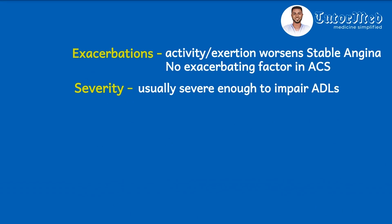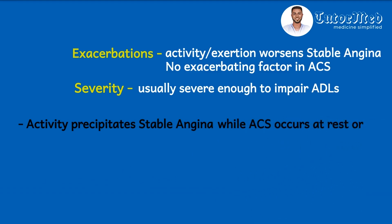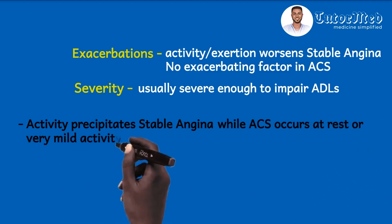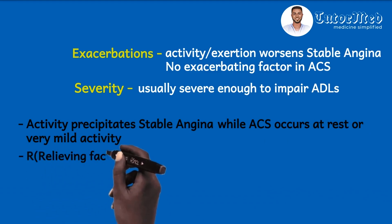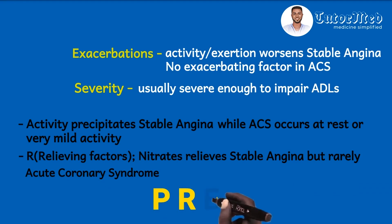For distinguishing features: activity precipitates stable angina while ACS occurs at rest or with very mild activity. For relieving factors, nitrates relieve stable angina but rarely relieve the pain of acute coronary syndrome. The acronym PRED can be used to remember these distinguishing features — P for precipitating factors, R for relieving factors, E for exacerbations, and D for duration.